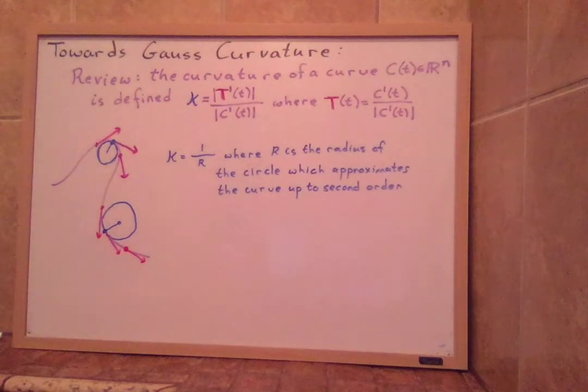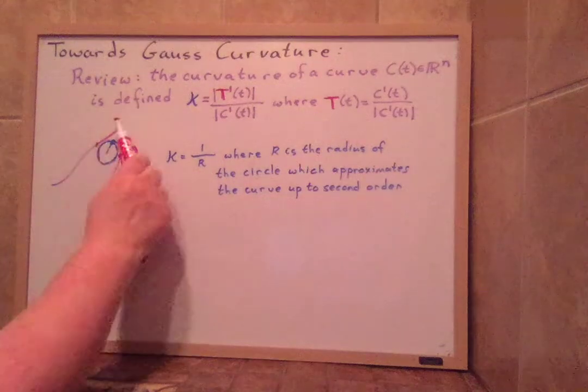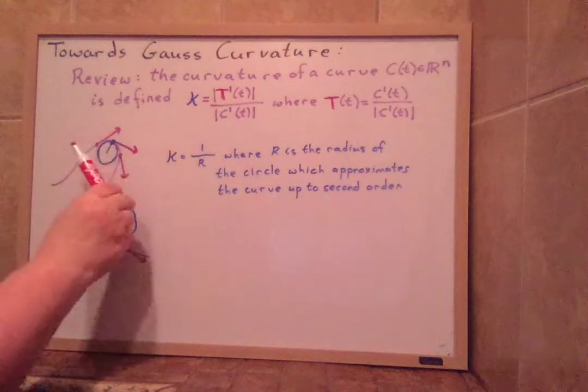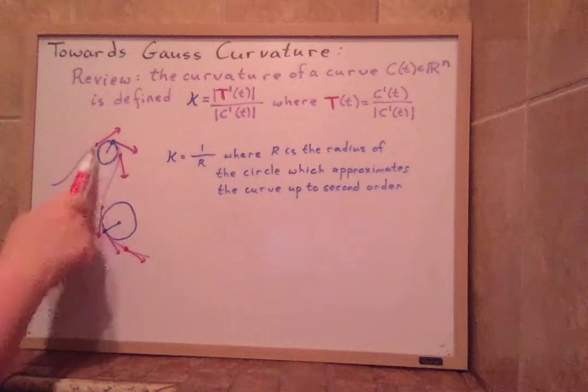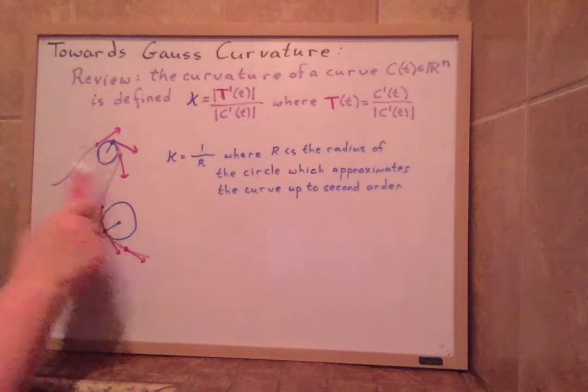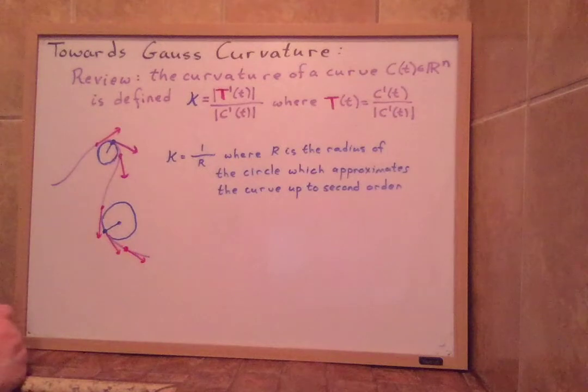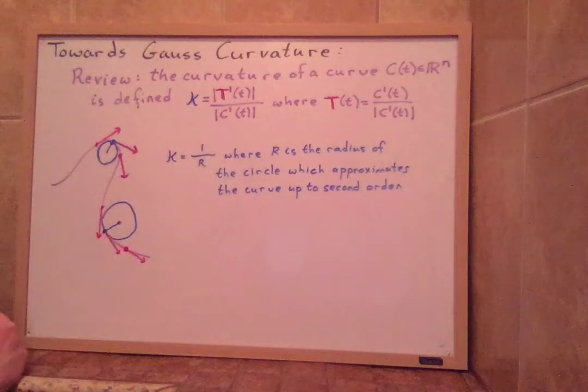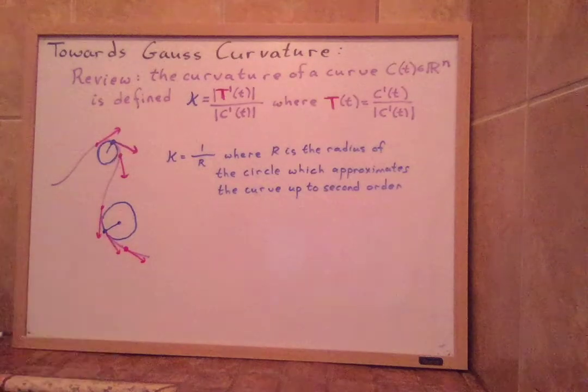And so we can think of these T primes. These are the tangent vectors in pink here. And as the tangent vectors bend, if they bend quickly, you have a small circle that's approximating the curve up to second order. And then this curvature comes out as 1 over R. We figured that out earlier in the course, we proved that.